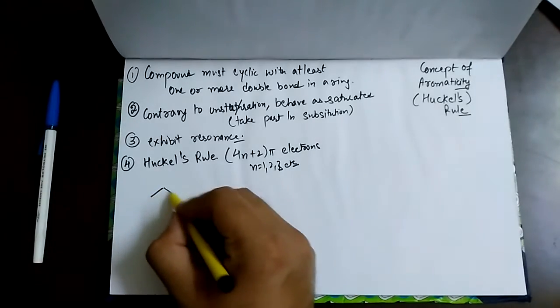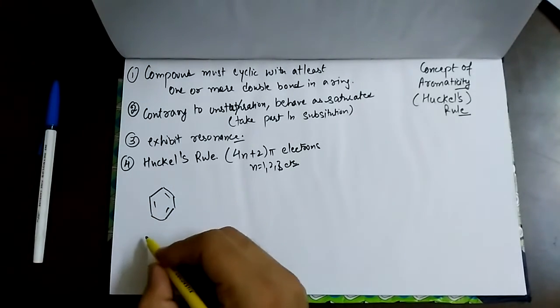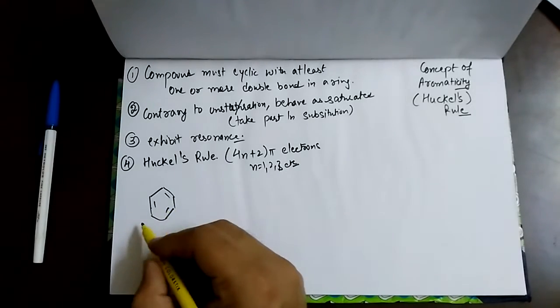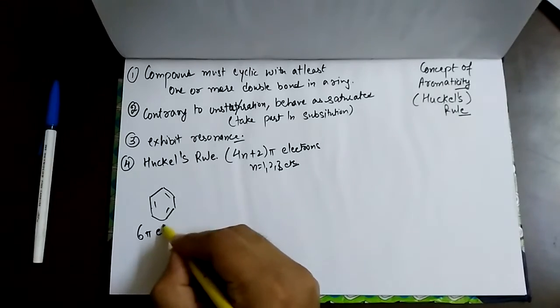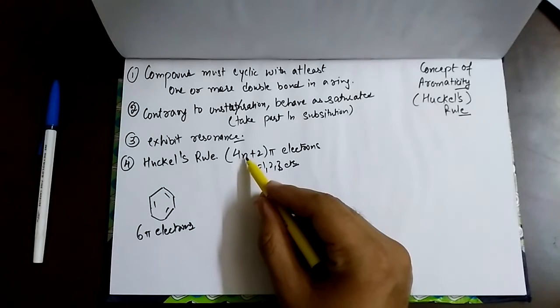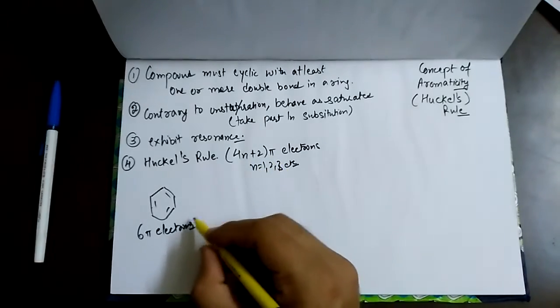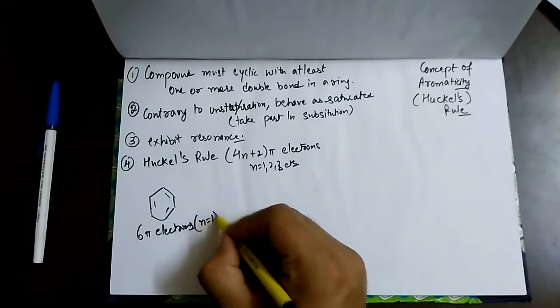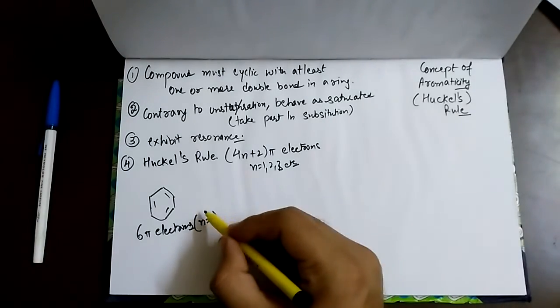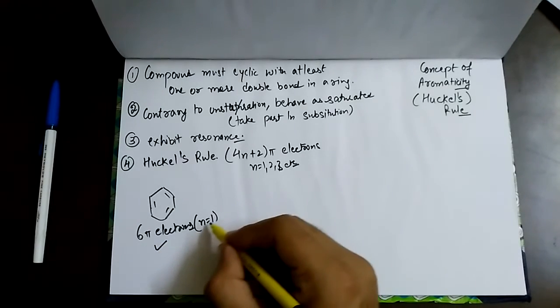If we take an example of benzene, let's start from the easiest one. It is having 6 pi electrons. If I place the value of n as 1, the overall output will be 6 pi. So 6 pi electrons occurs when n equals 1, so it follows and obeys this formula. Therefore benzene is an aromatic compound.